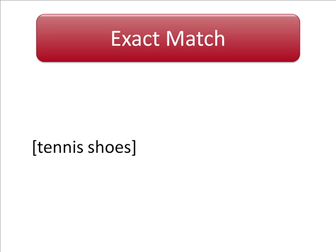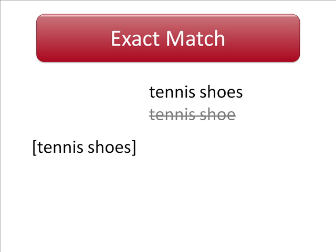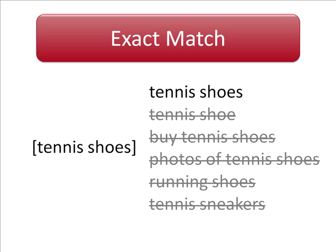The exact match keyword employs the narrowest targeting, and it uses brackets around the keyword, like in this one. We'll show your ad for searches that match your exact phrase exclusively. So in this case, we'd show this advertiser for the phrase tennis shoes, but not for any of the other options.